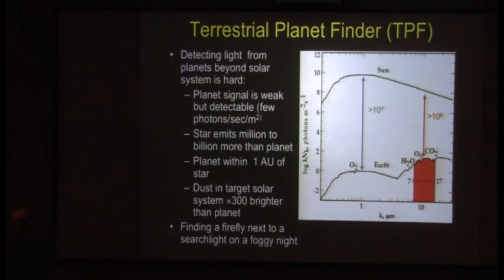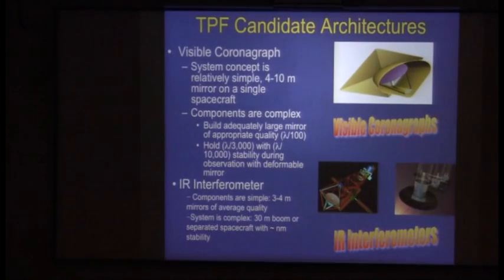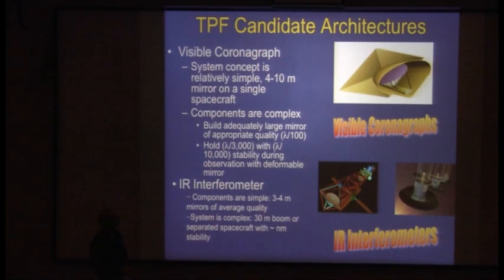So that's leading towards a technology drive, and there's two possible architectures or technologies people are talking about. These are just pictures, cartoons of what they might look like. One is called an optical coronagraph, and you all are familiar with coronagraphy at some level, although we might not have used that word.